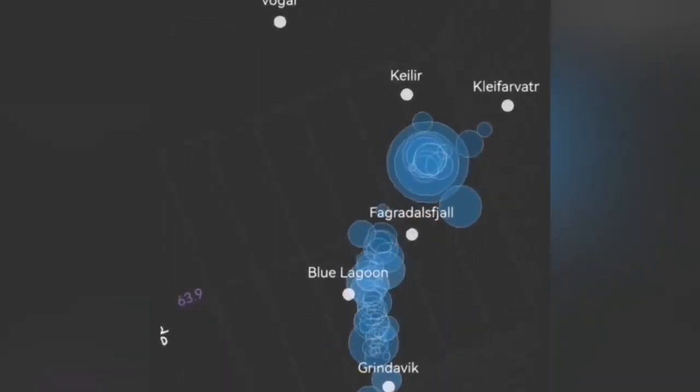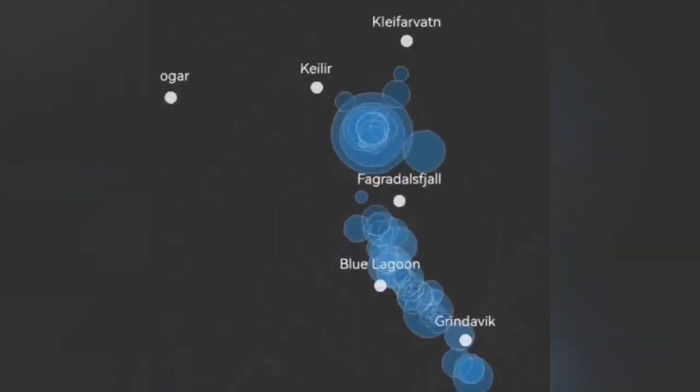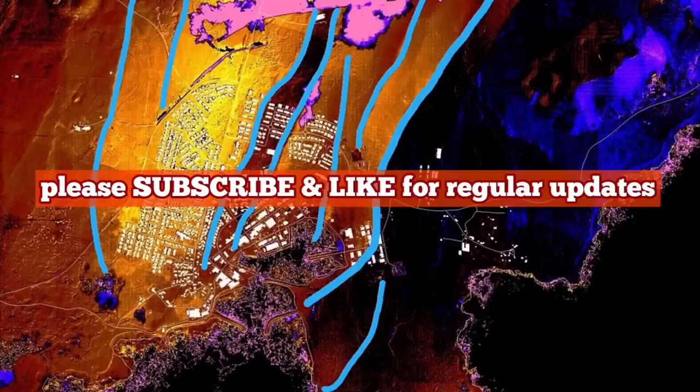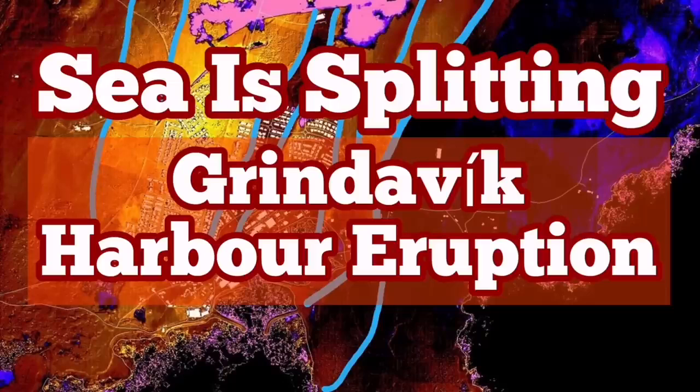Near the Svartsengi, we don't have Sundhuka, we have something, and now off the coast of the Grindavik, in the ocean, we see the rising of the earthquakes, means the magma is rising with it.